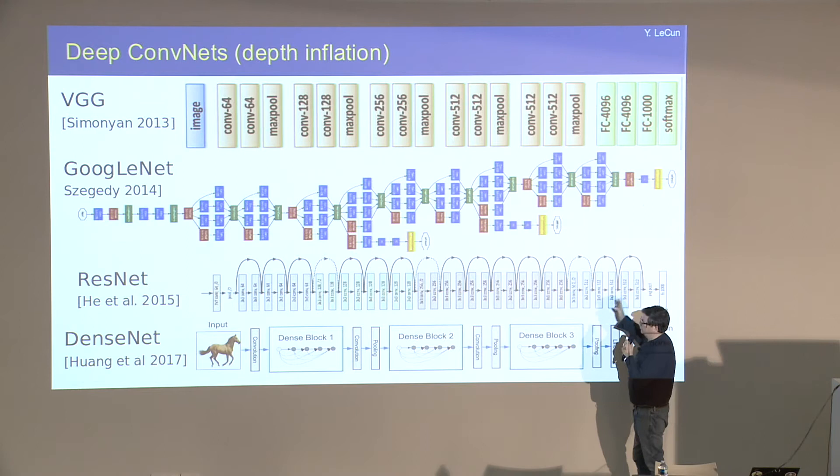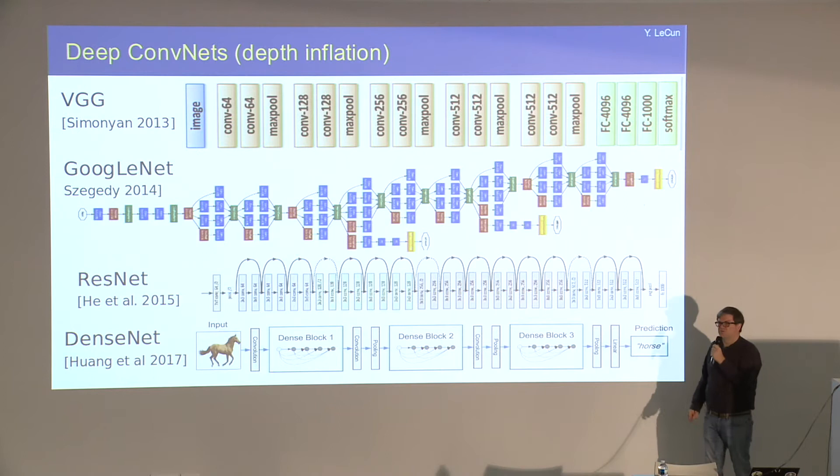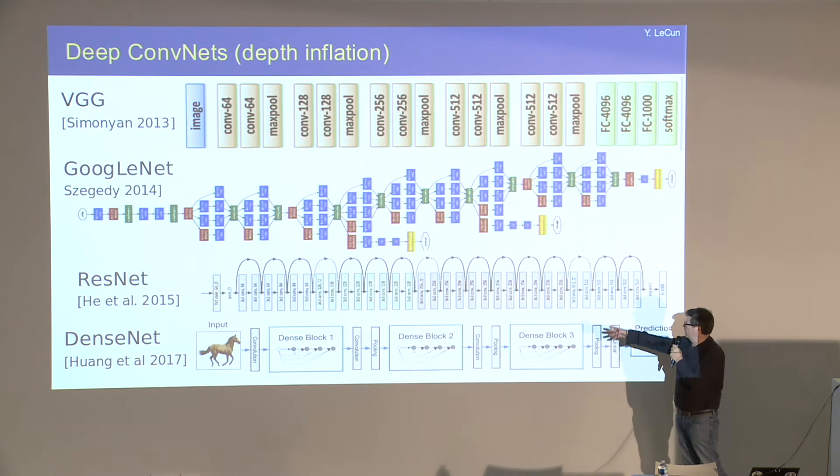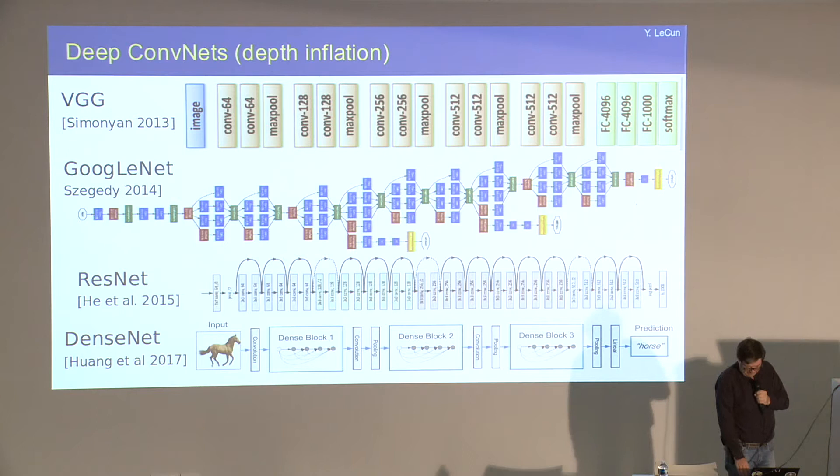You can think of the long succession of layers as progressively refining the answer and cleaning up the representation. There are also variations where skip connections skip multiple layers — that's called DenseNet.